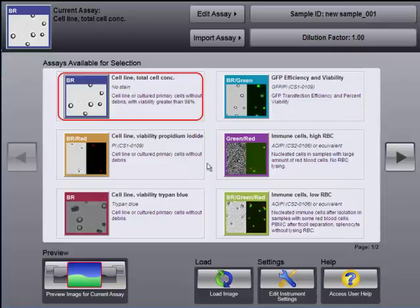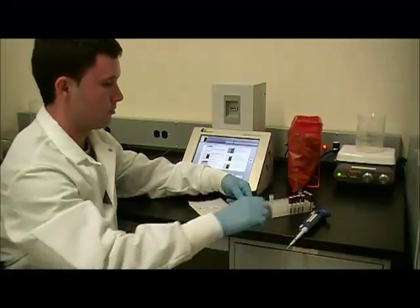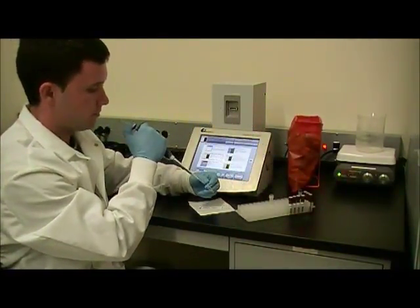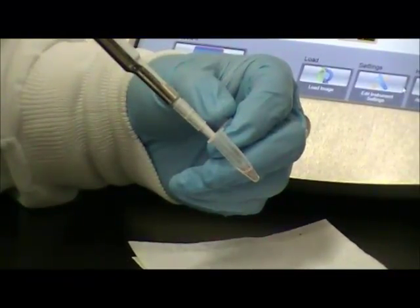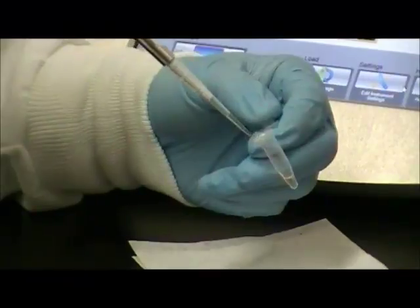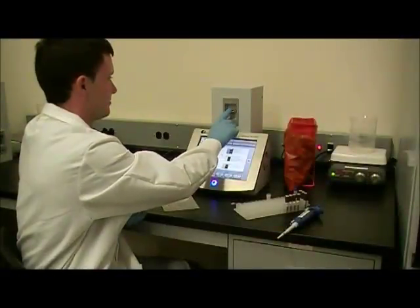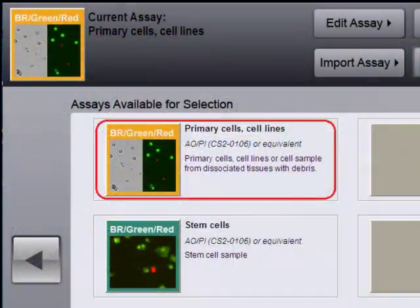Viability analysis can be performed with Trypan Blue or fluorescent dyes. In this example, acridine orange and propidium iodide are used to stain PBMCs. 20 microliters of stained sample is loaded into the Cellometer imaging chamber. The chamber is inserted into the Cellometer Auto2000 and the desired assay is selected.